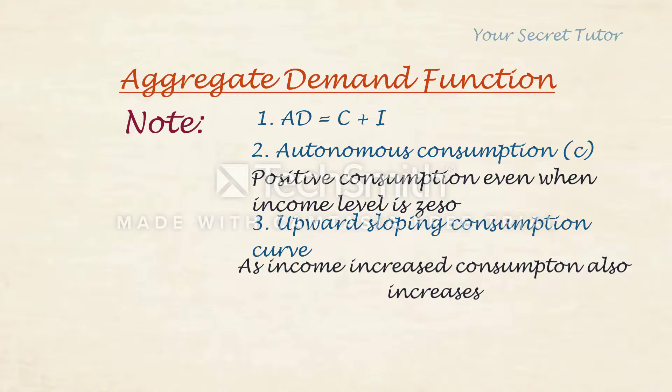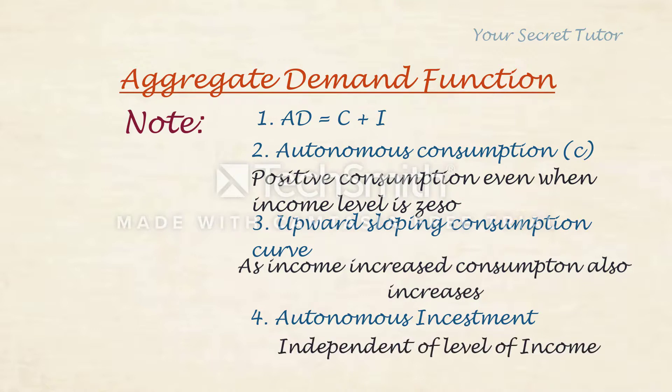Autonomous investment is independent of the level of income. Whatever the level of income, there is a certain fixed amount of investment, which is represented by a straight line parallel to the X-axis.